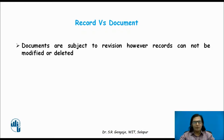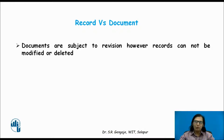I hope you have given thought to the importance of ECM for an organization. We will now try to understand the difference between a record and a document. A basic difference is that documents are subject to revision — they keep changing, are reviewed repeatedly, and are modified. However, once a document is finalized, it becomes a record, and the record cannot be modified or deleted.